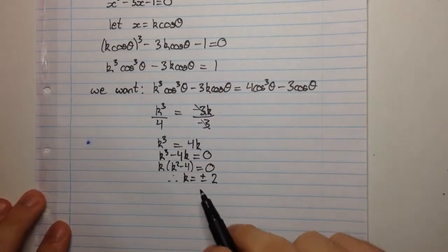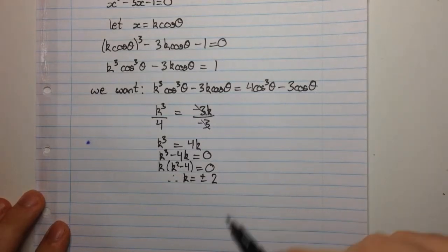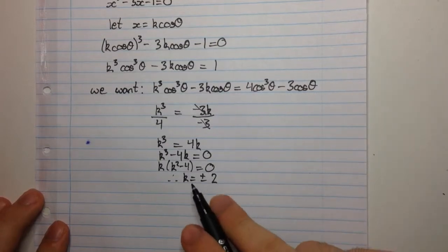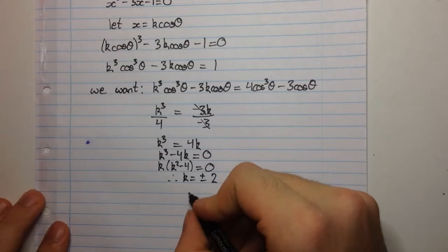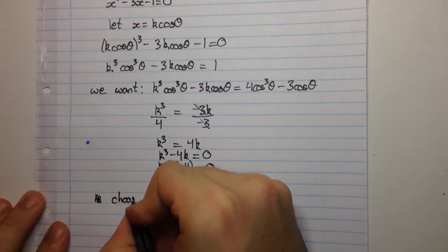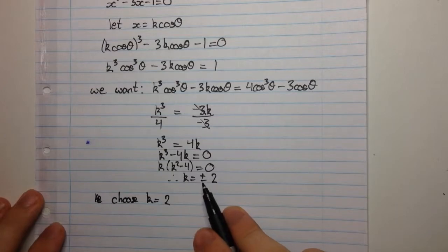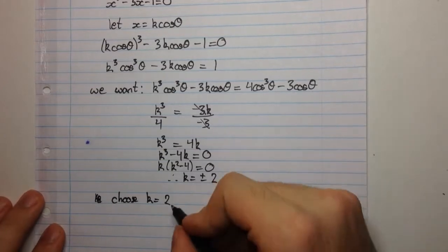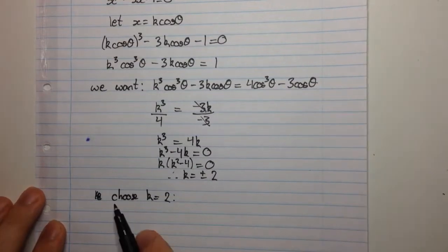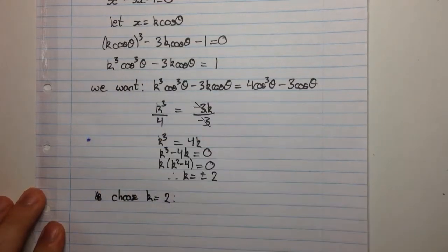Now, it turns out it doesn't matter whether you use 2 or negative 2 as your value of k, because in the end they'll give you the same answers. So just for simplicity in this video, I'll just choose my k to be equal to 2. But it definitely gives you the same solutions if you have k equals minus 2. So if we choose k equal to 2, what do we have now? Substituting it back into this expression here,